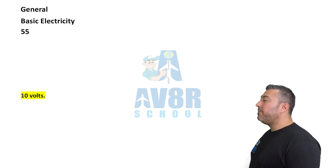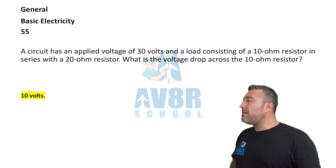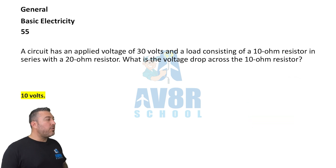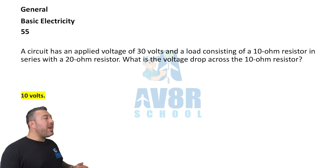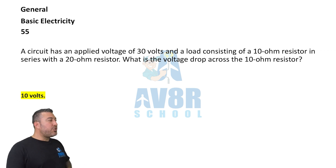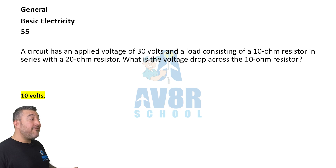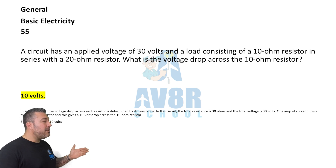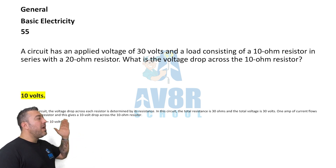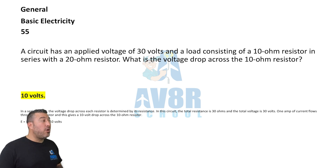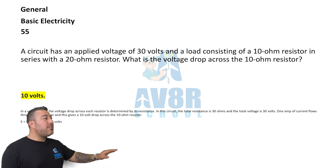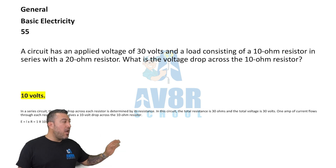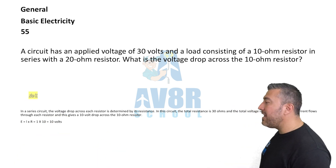Question 55. A circuit has an applied voltage of 30 volts and a load consisting of a 10 ohm resistor in series with a 20 ohm resistor. What is the voltage drop across the 10 ohm resistor? The answer is 10 volts.